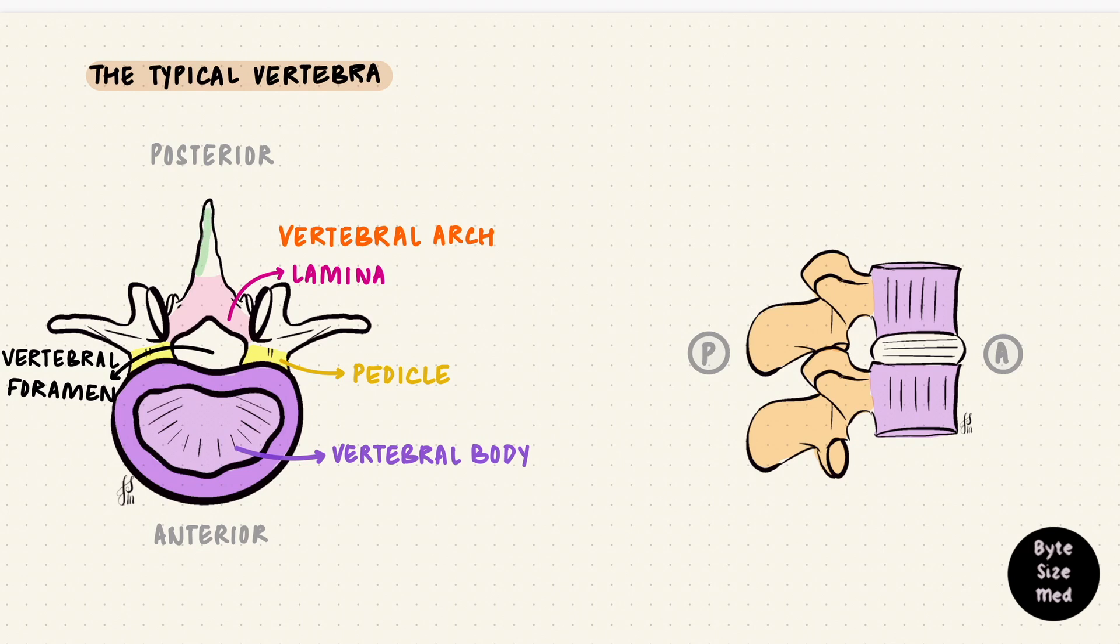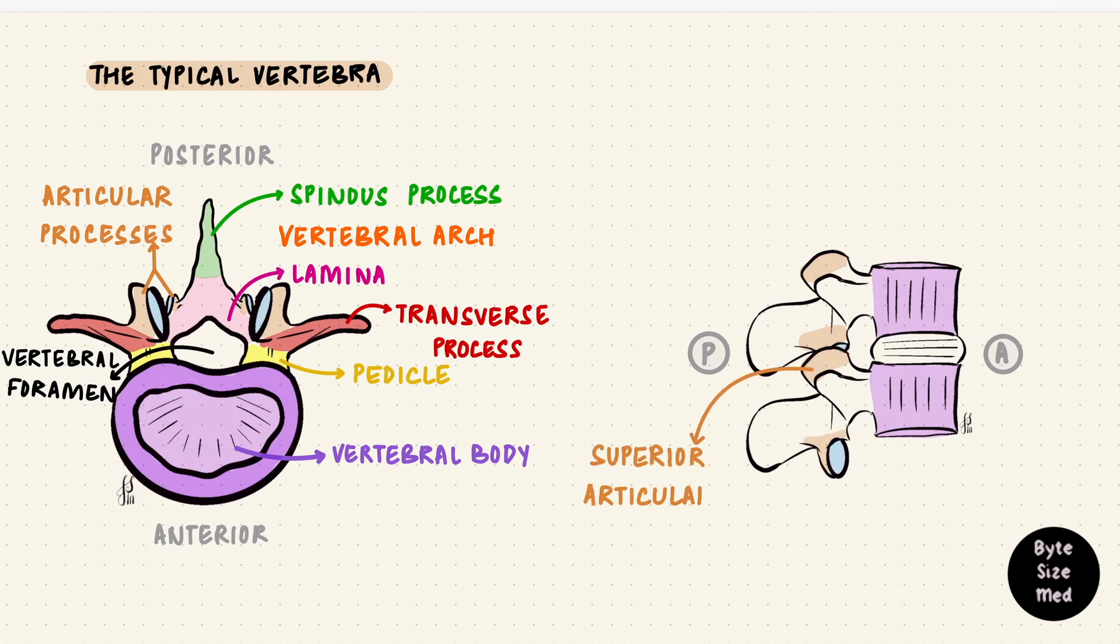Now we get to the processes. From the junction of those two laminae, the posterior projection is called the spinous process. On either side, from the junction between the pedicle and the laminae is a transverse process, one on each side. So that's one spinous process and two transverse processes. At the sites where the pedicles join the laminae, there are articular processes. Two above and two below. These are the articular processes. The one above is called the superior articular process and the one below is the inferior articular process.